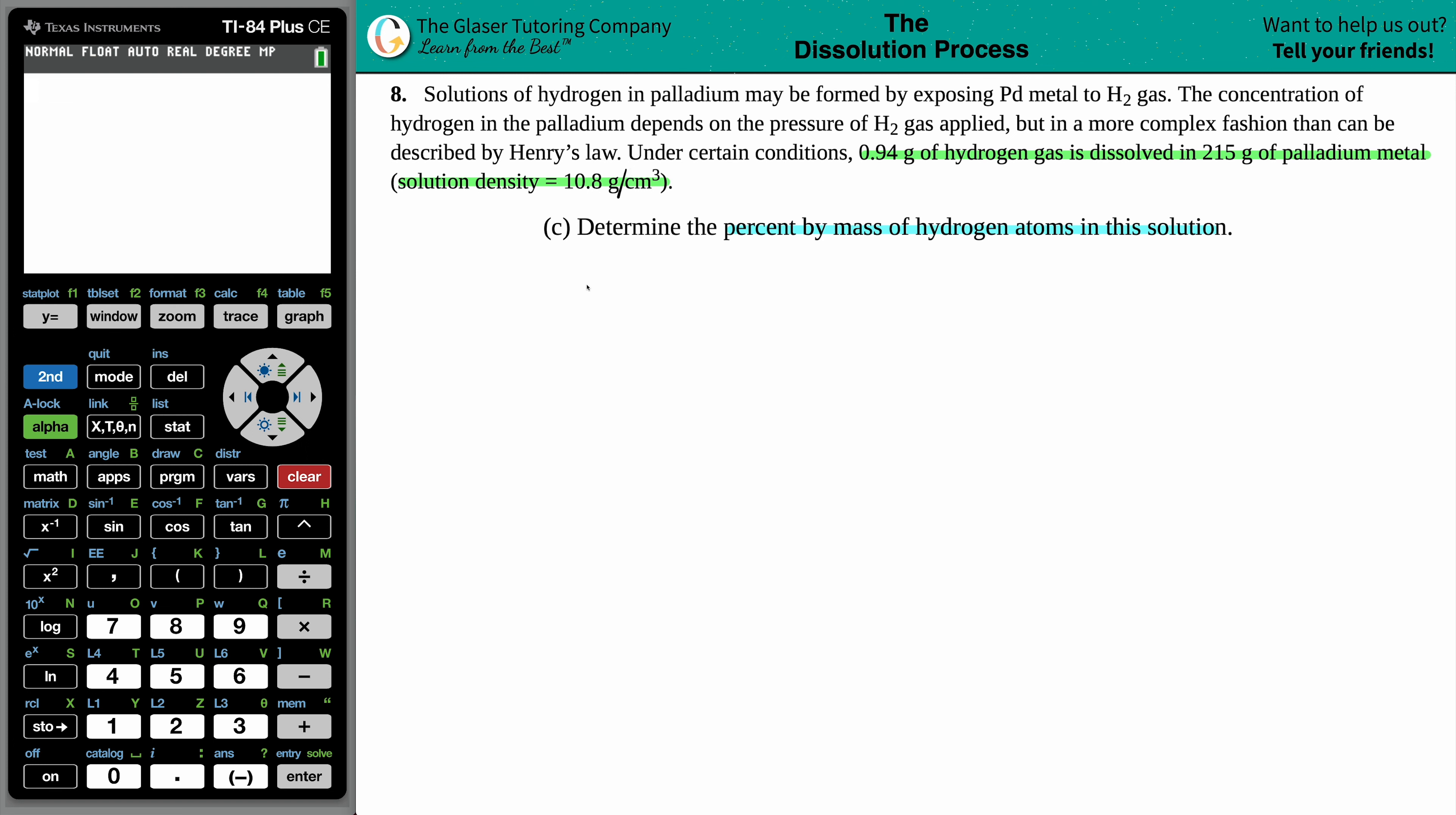We want to find the percent by mass of hydrogen in this solution. So percent by mass formula, anytime that you have a percent, remember, it's always just a fancy way of saying part over whole. So in this case, our percent by mass would be specifically of the hydrogen atoms. Now, hydrogen atoms, if we're talking about it in terms of atoms, we can only have a single element. So when you're talking about atoms, we're only supposed to be talking about the one element, which is H.